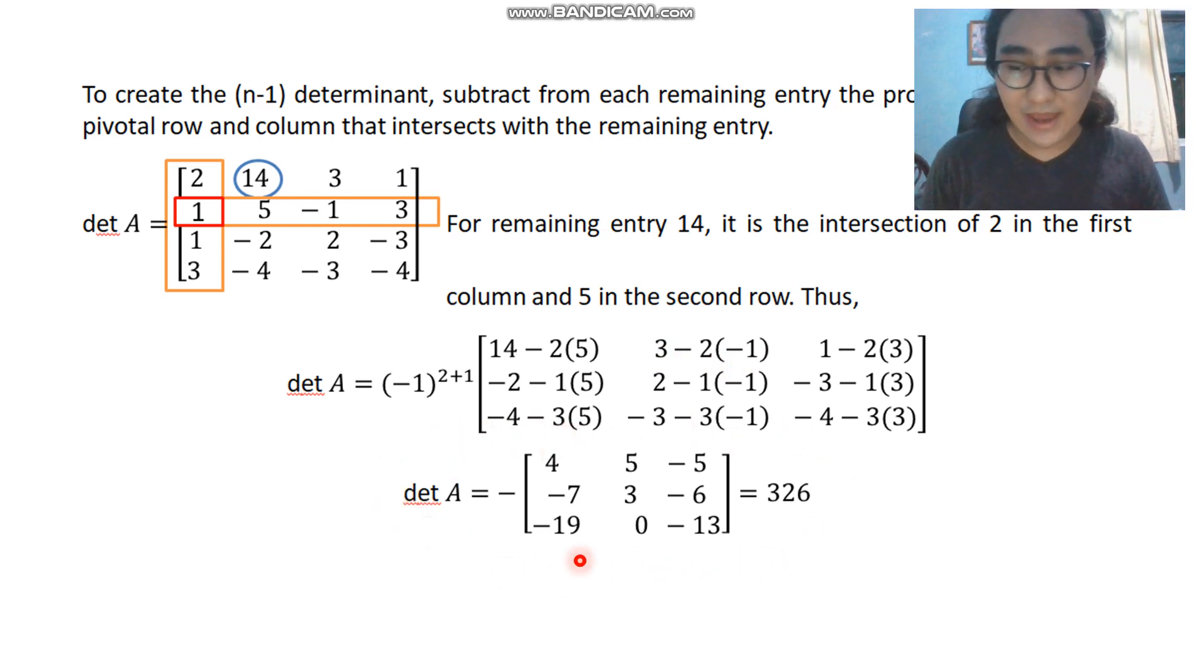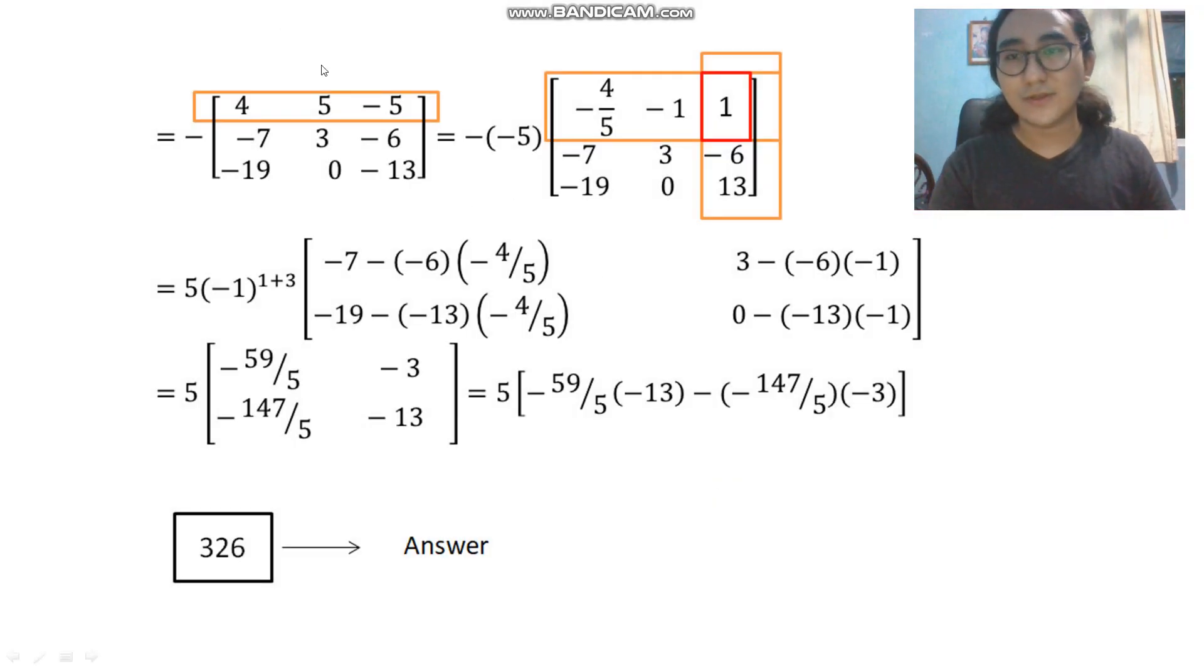That will give us this matrix right here. If we input it to the calculator, we're going to have a value of 326. But what if we don't have that opportunity to put in the calculator? That's okay. Again, we're going to use the pivot element here. But as you can notice, there's no 1 here.